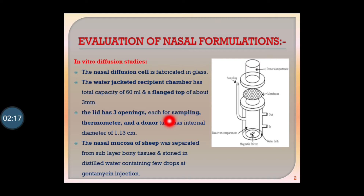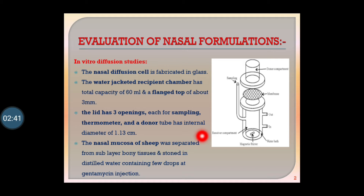The nasal mucosa of sheep is separated from the sublayer borne tissue and stored in distilled water containing a few drops of gentamicin injection. The sheep nasal mucosa is separated from the sublayer tissue and stored in distilled water with a few drops of gentamicin injection.